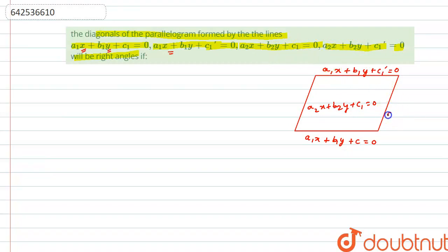Hence, the fourth line will be a2x plus b2y plus c1 dash equal to 0. So, these are the four sides of this parallelogram.